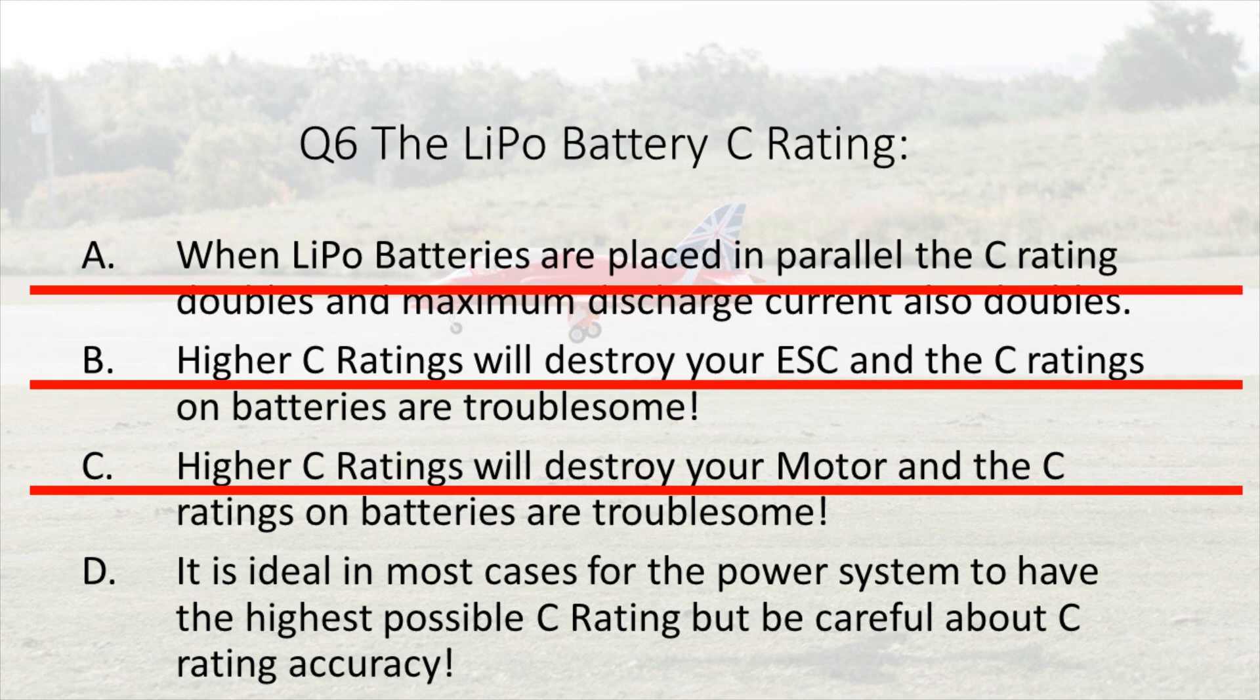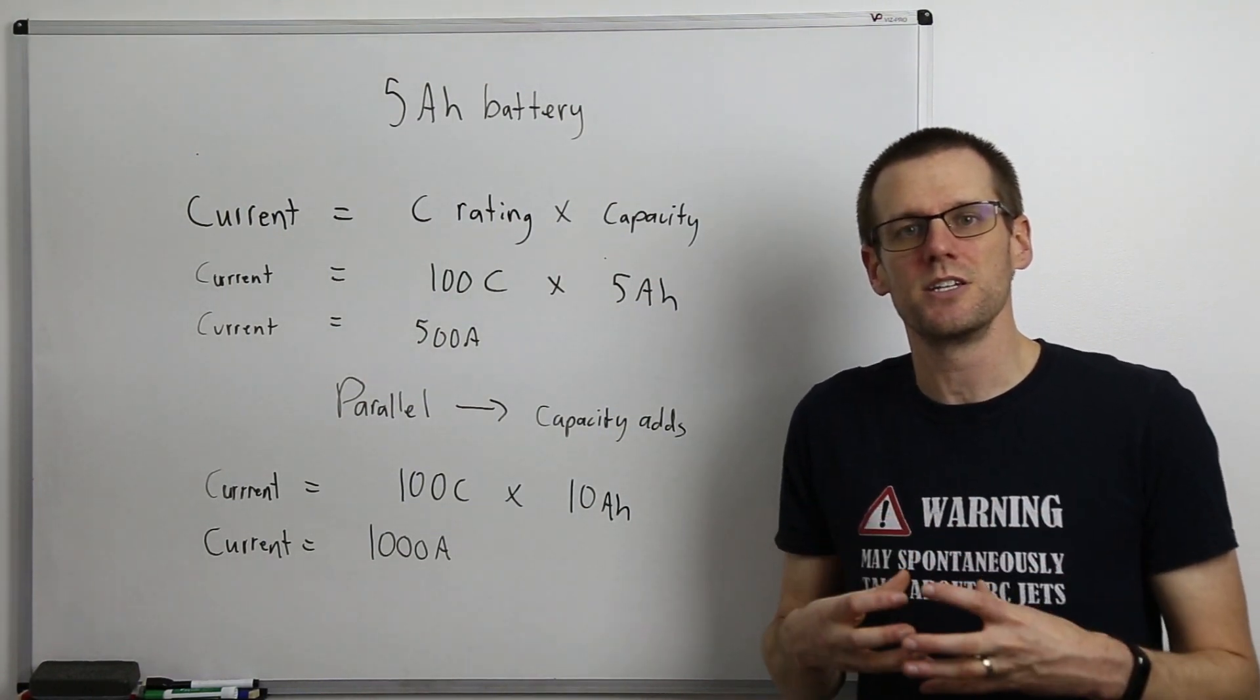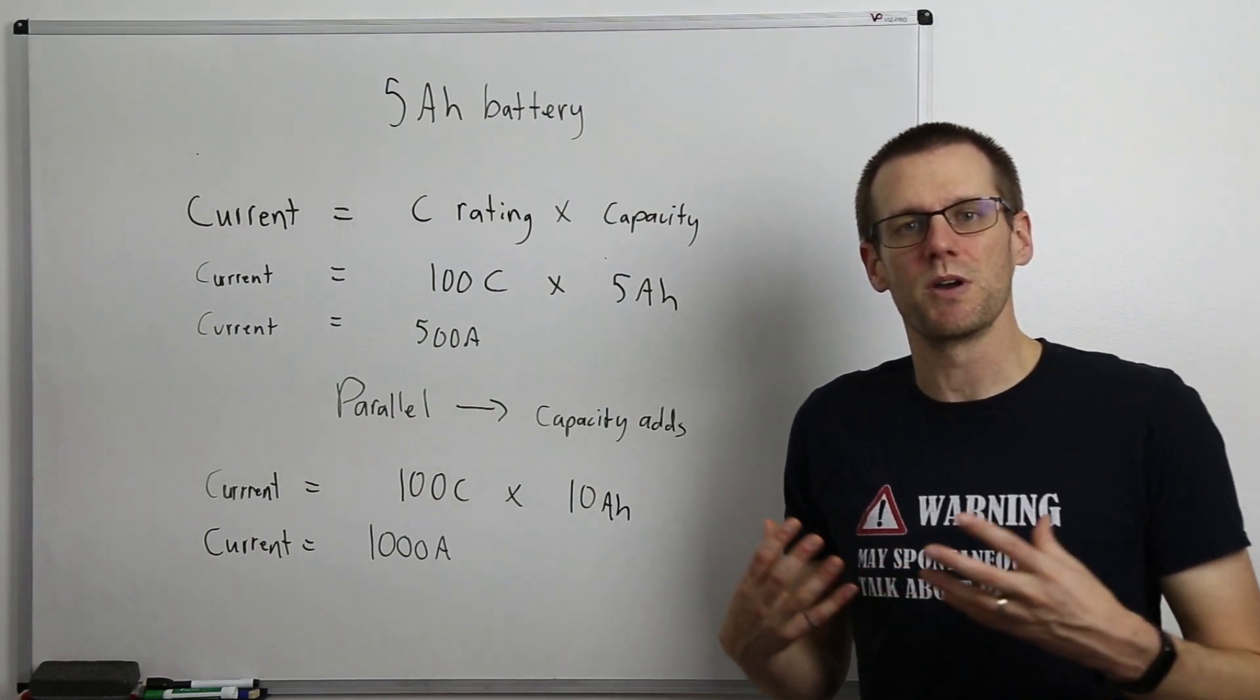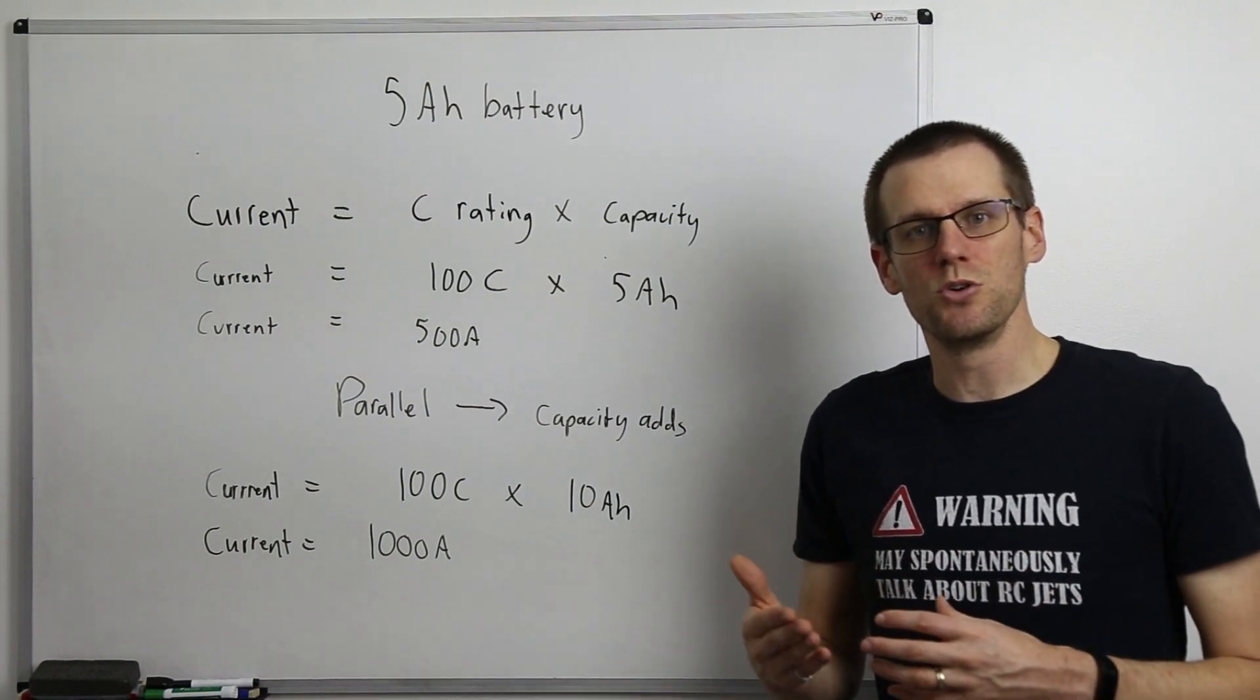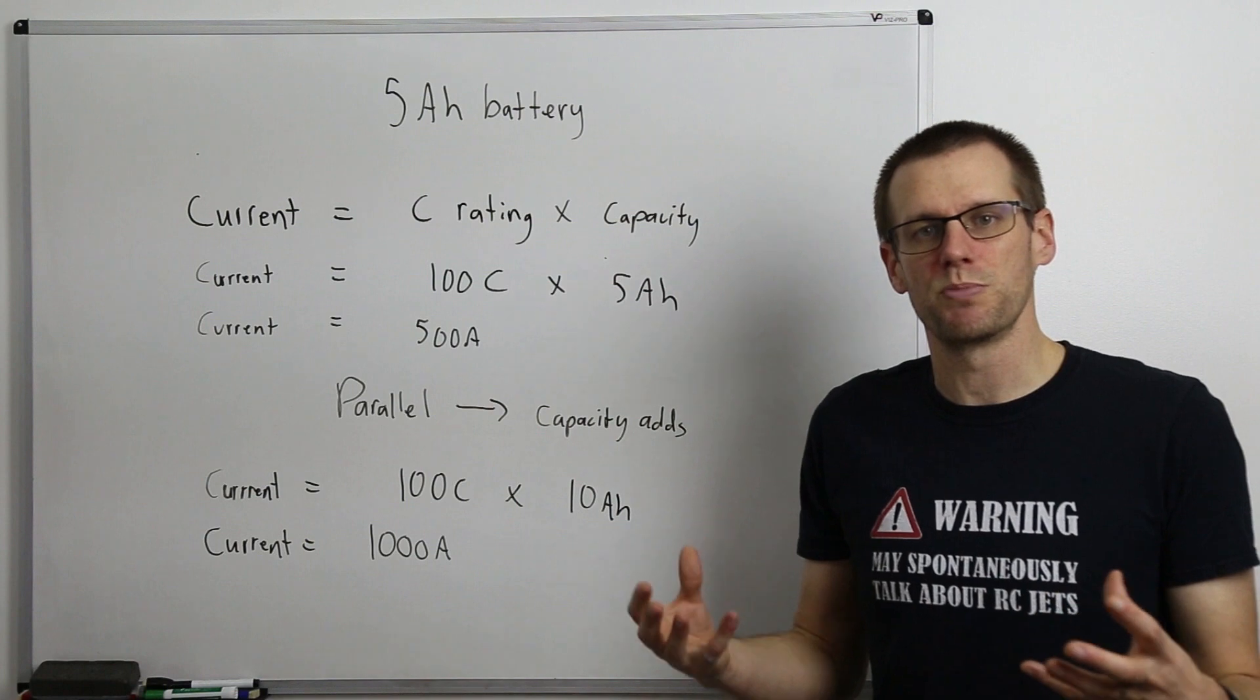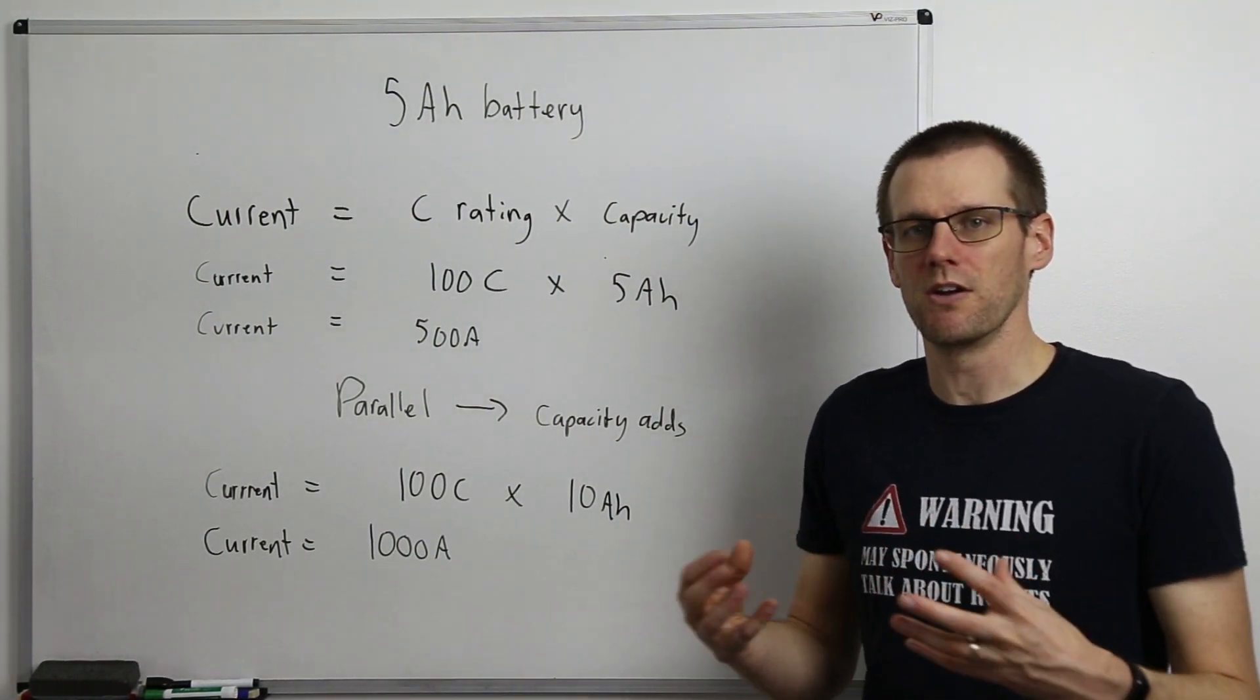This is the reason why A cannot be true. The last one is D, which says it is ideal in most cases for the power system to have the highest possible C rating, but be careful about the C rating accuracy. This is absolutely true. We want to make sure that we have the highest C rating possible for our system so that we can get the most amount of reliability and performance. But do be careful about that C rating spec that manufacturers provide, it may not be 100% accurate.